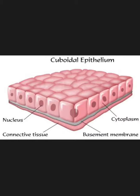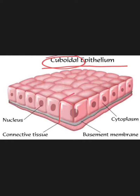The third type is cuboidal epithelium. From the name, you can understand that these cells look like cubes in surface view. The height of the cells appears almost equal to their width, giving a square appearance in side view. The nucleus is centrally located in each cell. Cuboidal epithelium is found in the thyroid gland, kidney tubules, salivary glands, pancreas, and liver.